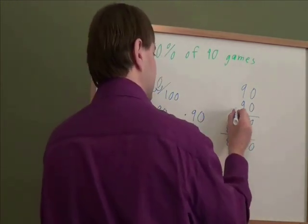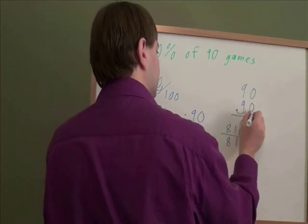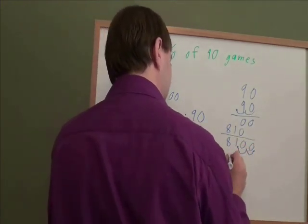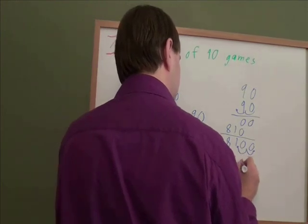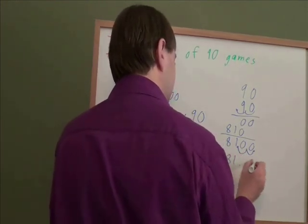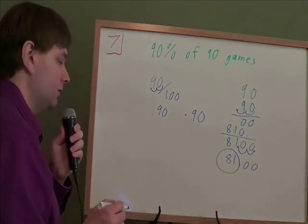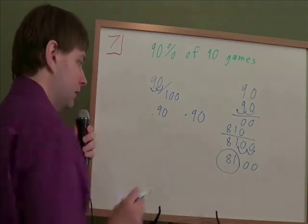And how many decimal places did we start with? We started with two decimal places. So we need to put two decimal places on our answer. So we have 81.00. You don't need zeros after a decimal. So that's just 81. If you win 90% of 90 games, that is 81 victories.